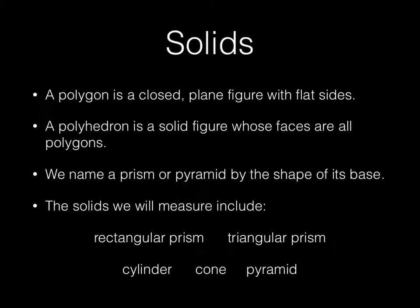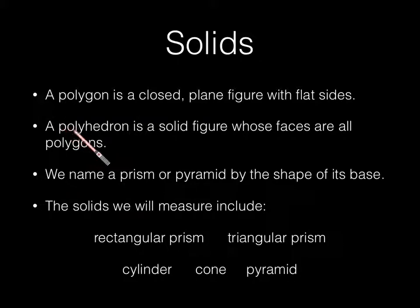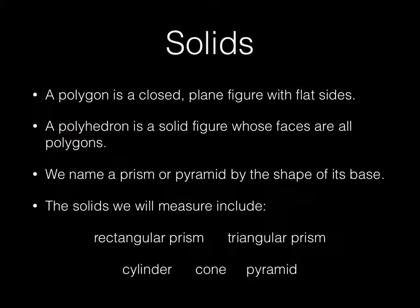So the solids we're going to study: a polygon is a closed plane figure — and plane means flat — with flat sides. A polyhedron is a solid figure whose faces are all polygons. We name a prism or a pyramid by the shape of its base. We're going to look at rectangular prism, triangular prism, cylinder, cone, and pyramid.